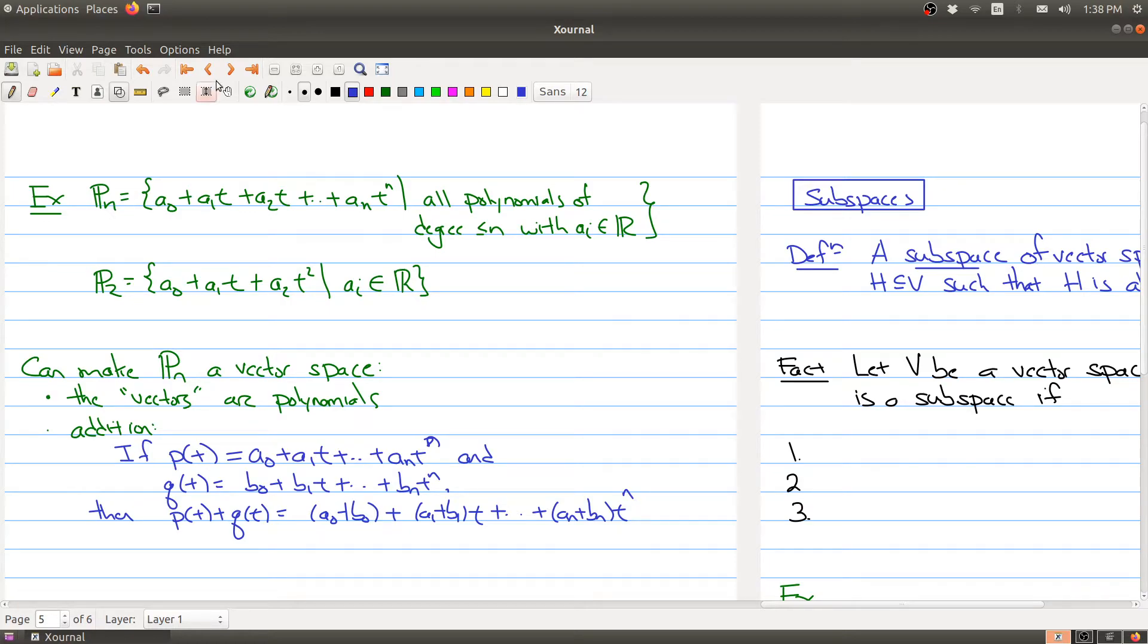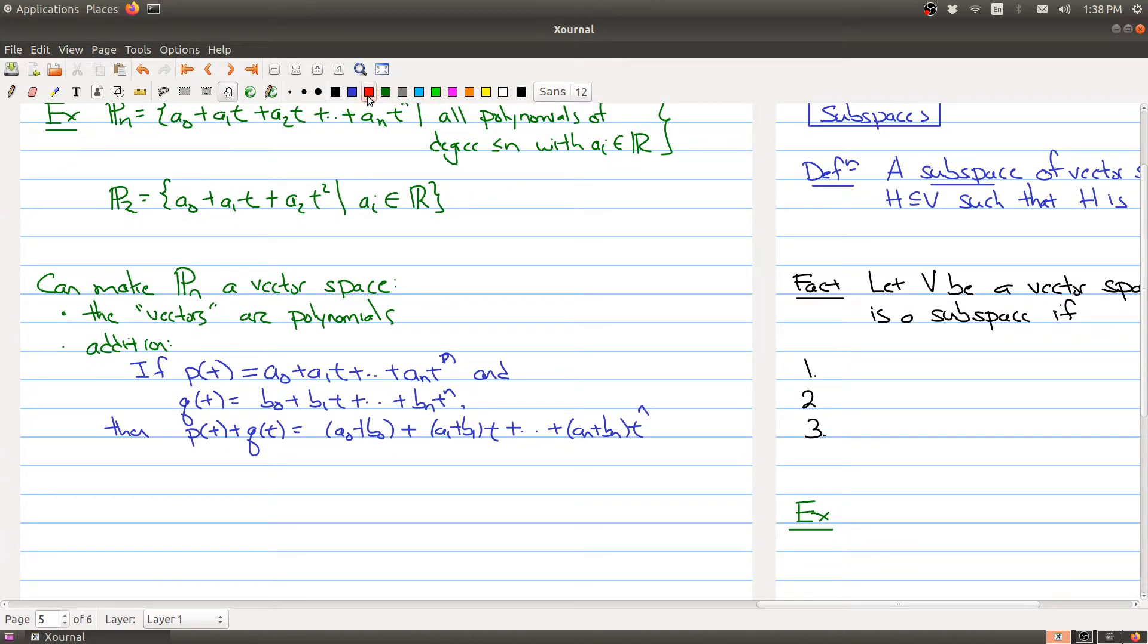What about scalar multiplication of my vectors? Well it will just be regular scalar multiplication of polynomials. So scalar multiplication: a constant times my polynomial p(t) would just be the polynomial that you get by multiplying each of the coefficients by the constant c. And I'll do an example in a second.